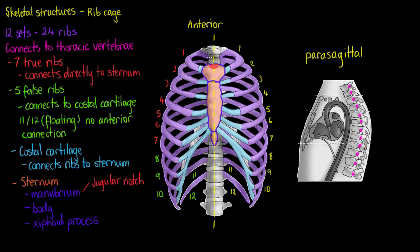The jugular notch is a small depression in the bone that we sometimes refer to as the supra sternal notch — supra meaning above, sternal meaning the sternum. The second structure we will find is the clavicular notch. Both the clavicular notch and the jugular notch are parts of our manubrium of the sternum.